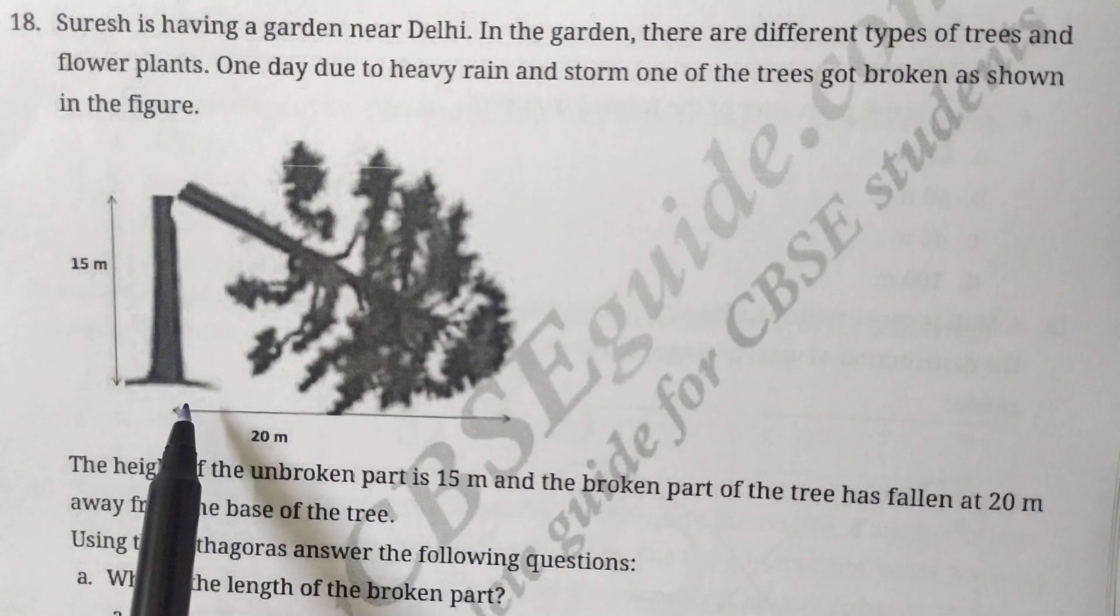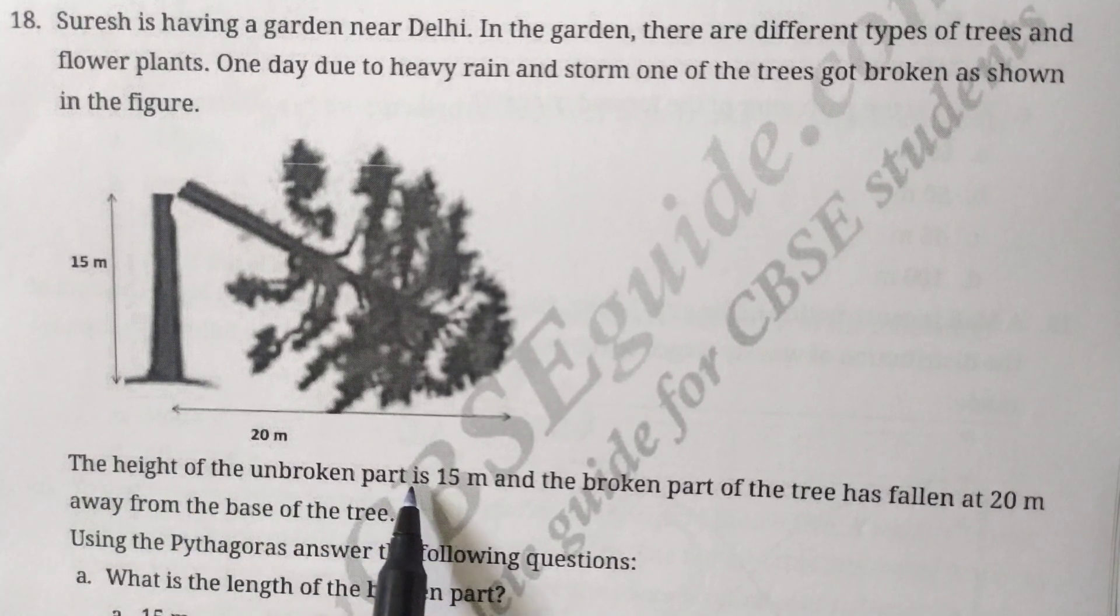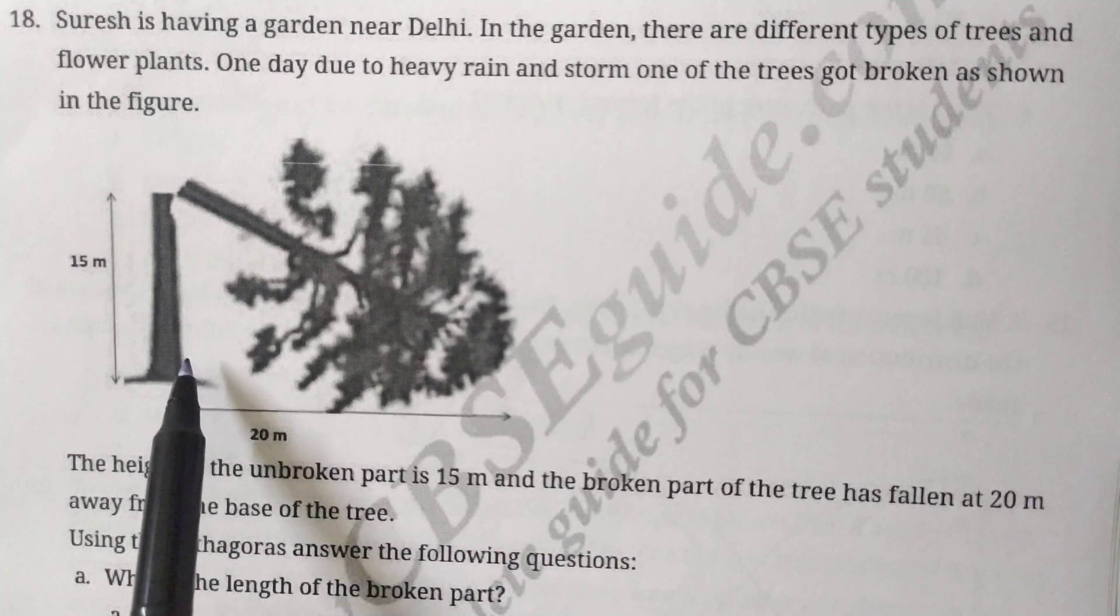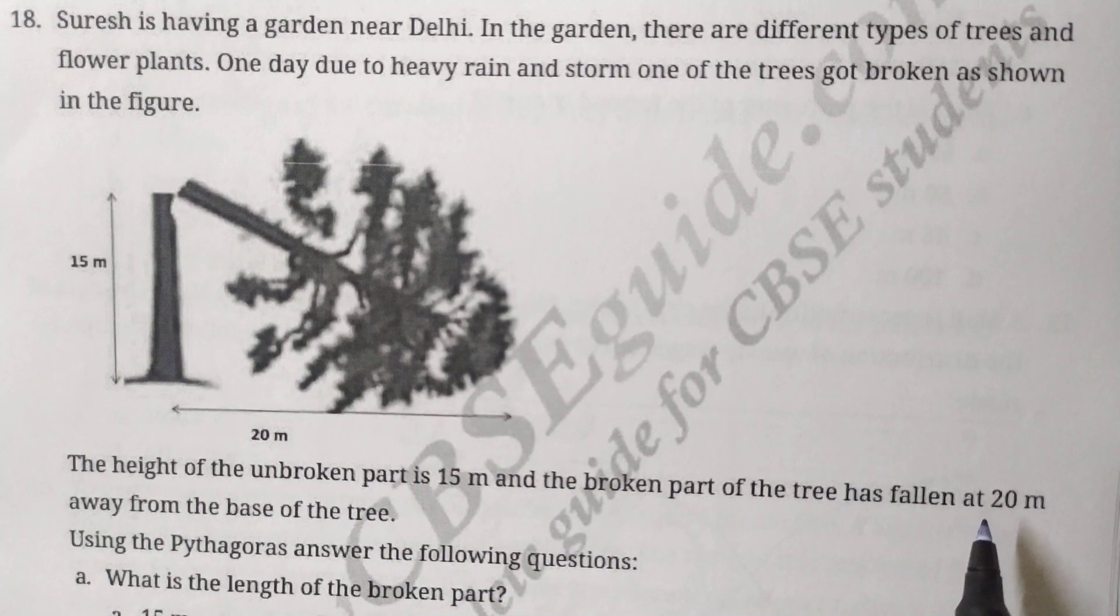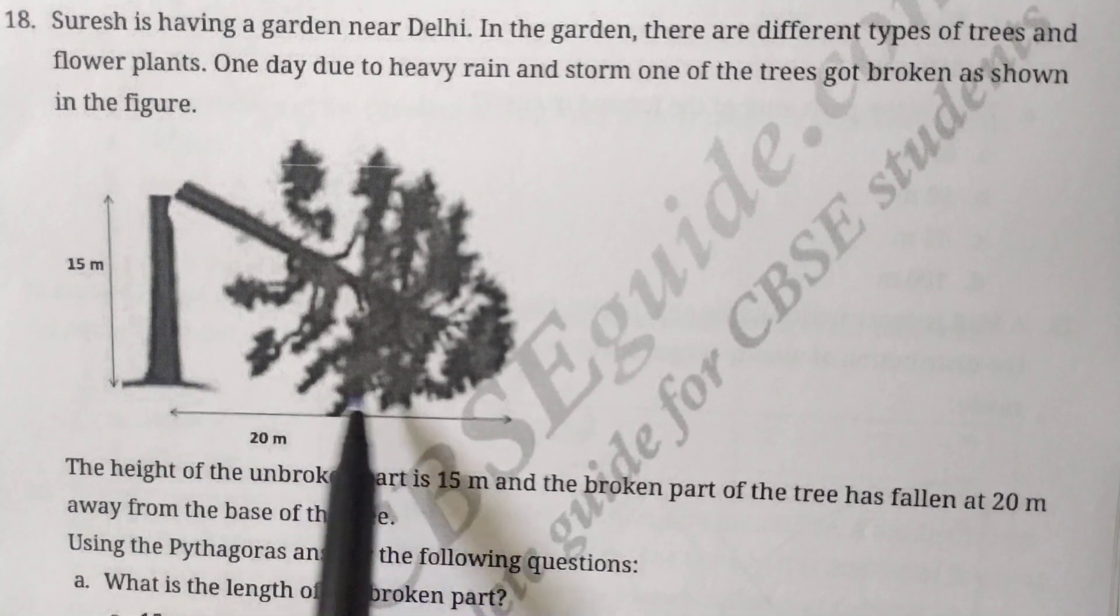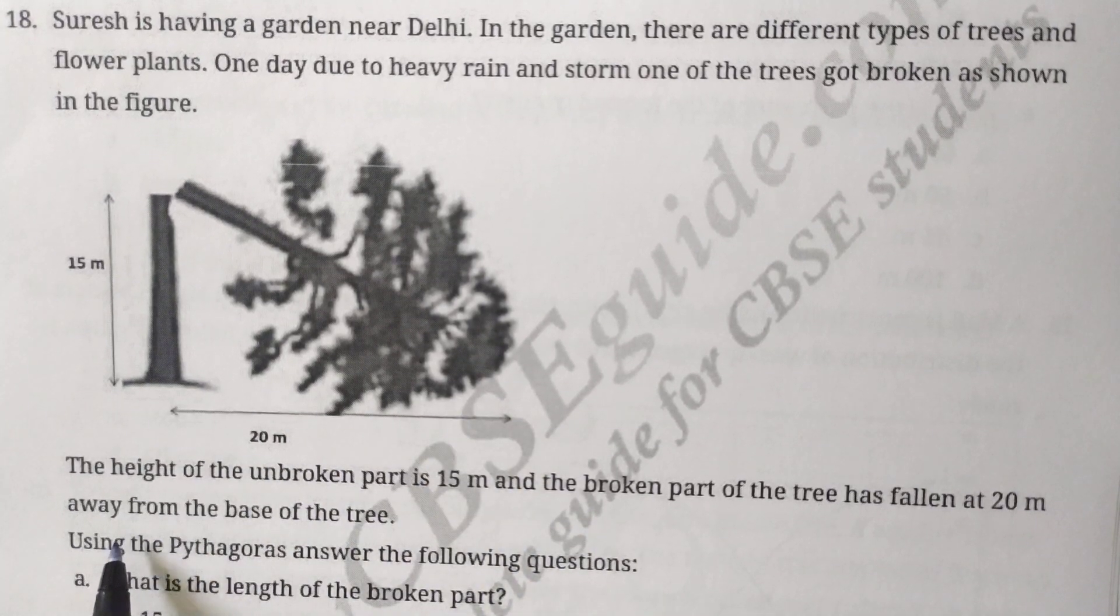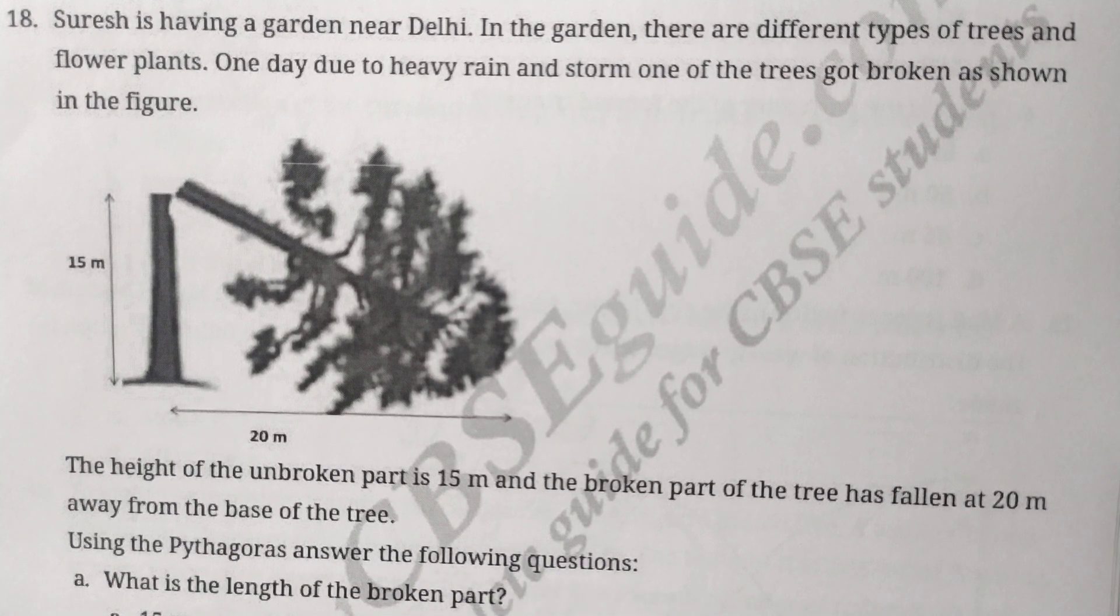The height of the unbroken part is 15 meters and the broken part of the tree has fallen at 20 meters away from the base of the tree. Using the Pythagoras theorem, answer the following questions.